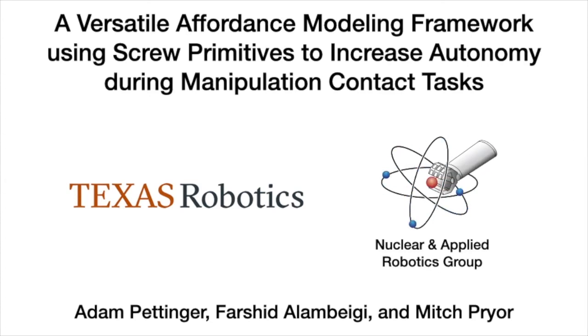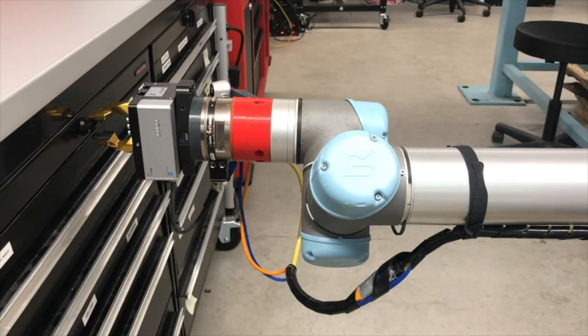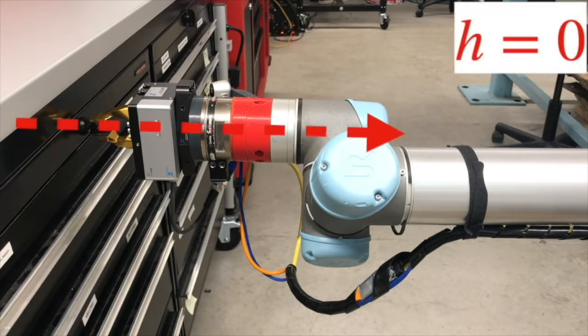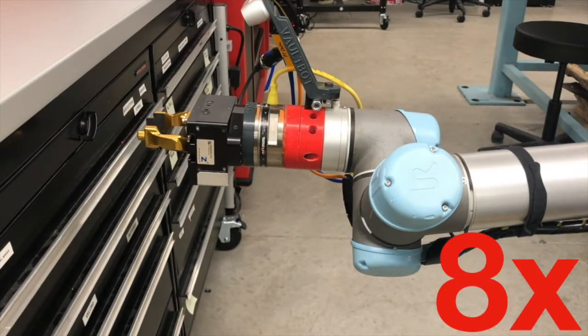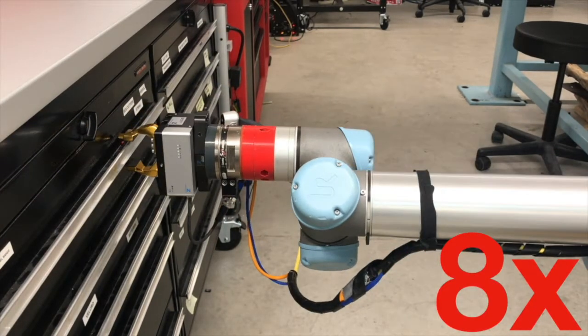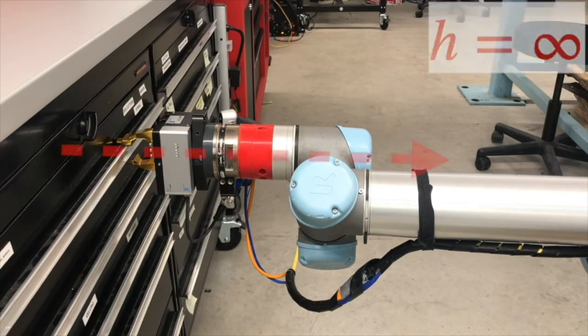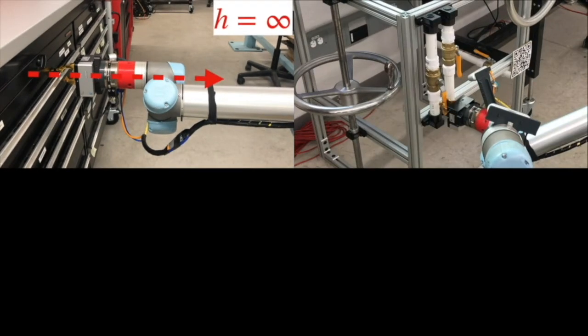In this work, we model articulated object affordances using screw primitives and give a general framework for executing these primitives. We capture the motion of an articulated object as a screw axis in the affordance frame. The object rotates about the axis and the pitch h allows translation along it.